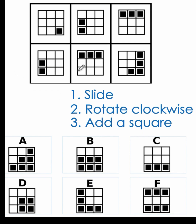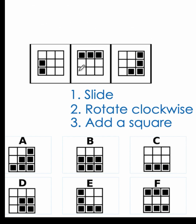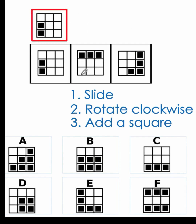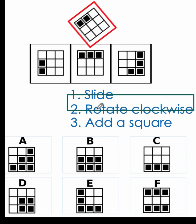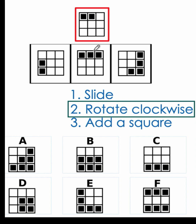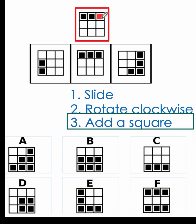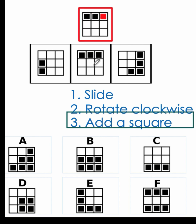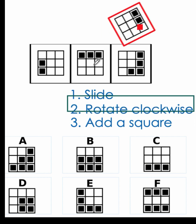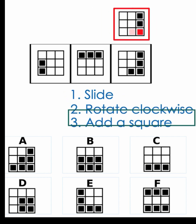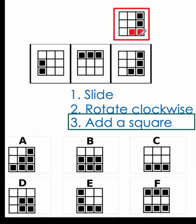Let's use the same rule to test the entries in the second row. Let's remove the first row and replicate the first picture. Following these three rules — slide to the right, rotate clockwise, and add a square at the end — we have the exact replica of the second picture. Then following the same rule: slide to the right, rotate clockwise, add another square next to the previous red square, and we have the exact replica of the third picture.